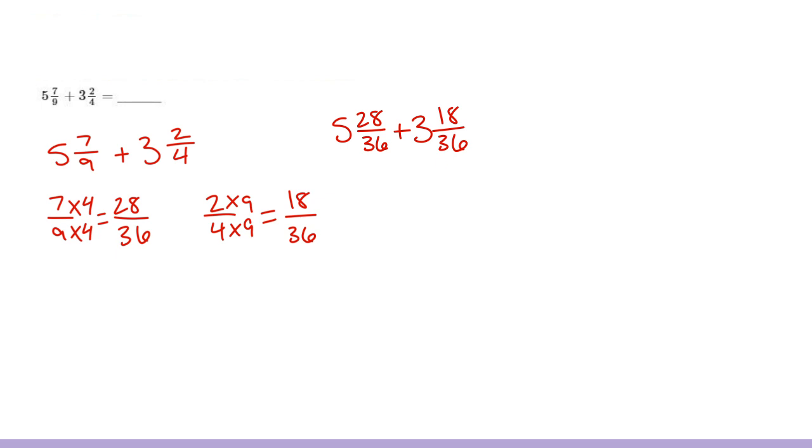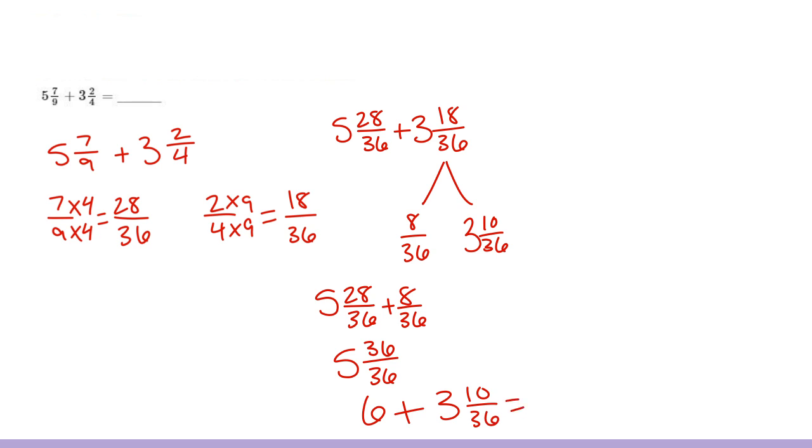One of the ways now to do this is to number bond 3 and 18 thirty-sixths into a friendly unit to add to 5 and 28 thirty-sixths. We could write 8 thirty-sixths and 3 and 10 thirty-sixths. How this helps me is I can now add 5 and 28 thirty-sixths plus 8 thirty-sixths, which would give me 5 and 36 thirty-sixths, which is 6 wholes. I now can add in the 3 and 10 thirty-sixths and that would give me 9 and 10 thirty-sixths.